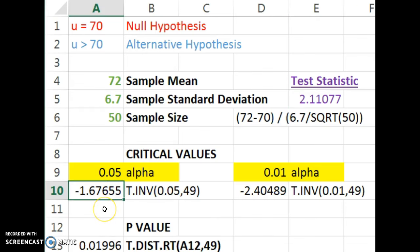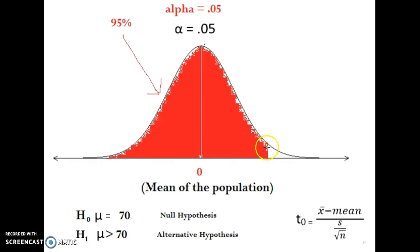Excel gives you back the cutoff value for 5% in the left-hand tail — Excel always gives a left-hand result — but by symmetry the right-hand tail cutoff is a positive 1.67655. So if that's your cutoff for the right-hand tail, look at your test statistic of 2.11. Since 2.11 is greater than 1.67, you are in that 5% tail — you're really far away from where you'd expect to be. Based on this sample, you would reject the null hypothesis.